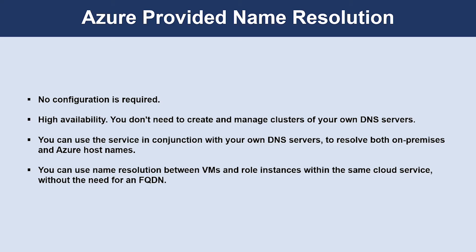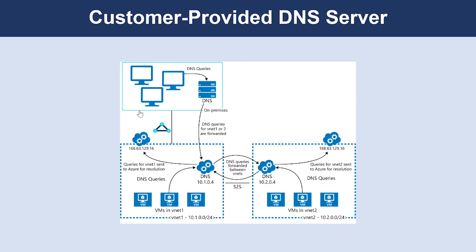Virtual networks in the classic deployment model require an FQDN when resolving names in different cloud services. Azure also provides the ability for you to use your own DNS servers. DNS servers within a virtual network can forward DNS queries to the recursive resolvers in Azure, enabling you to resolve host names within that virtual network. Forwarding queries allows VMs to see both on-premises resources and Azure provided host names, and also enables DNS resolution between virtual networks and allows on-premises machines to resolve Azure provided host names.